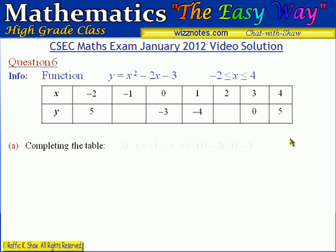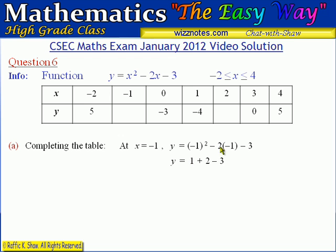At x equals negative 1 we substitute into the function: negative 1 squared minus 2 times negative 1 minus 3. That gives us 1 plus 2 minus 3, which equals 0. So the y value for that cell is 0.